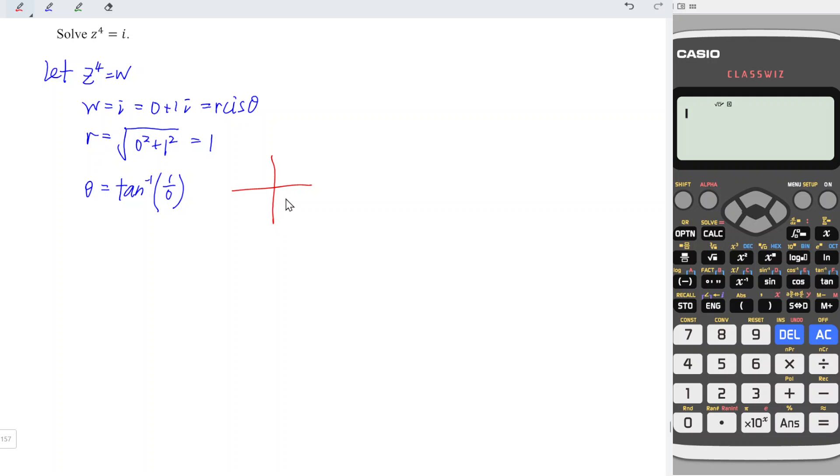So draw two lines. We have 0 for x and 1 for y, which is positive. In order to fulfill this condition, we must have this line. So in other words, this is 90 degrees. Since z to the power of 4 is equal to w and w is equal to cis 90 degrees,